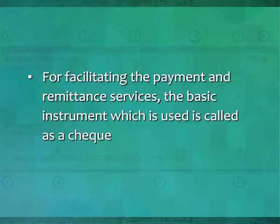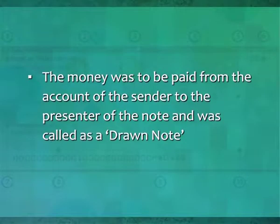For facilitating the payment and remittance services, the basic instrument used is called a cheque. According to research, during the first century AD, the banks in Persia and the surrounding areas issued letters of credit called 'sakks' or ACA checks, which are believed to be the basis of modern-day cheques. The London Goldsmith Bank was the first bank in England, and its customers issued a note stating their requirement of paying a person a said amount of money.